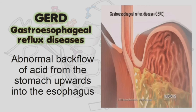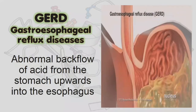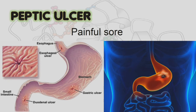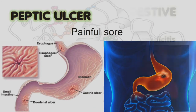The next digestive disorder is peptic ulcer. An ulcer is a painful sore in the mucous lining of the stomach and duodenum. Sores located in the stomach are known as gastric ulcers, while sores in the duodenum are called duodenal ulcers. Peptic ulcer is caused by too much consumption of acid, alcohol, smoking, or bacterial infection. Treatment involves the use of antacids or antibiotics.